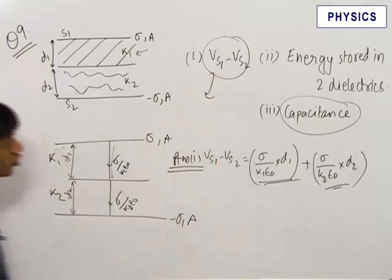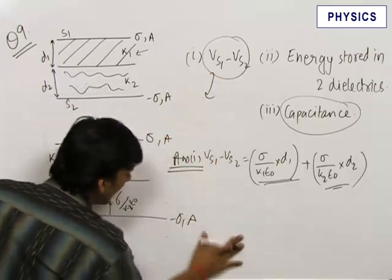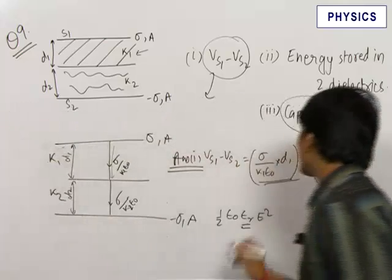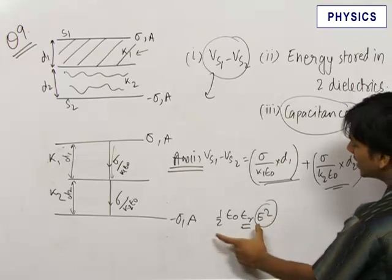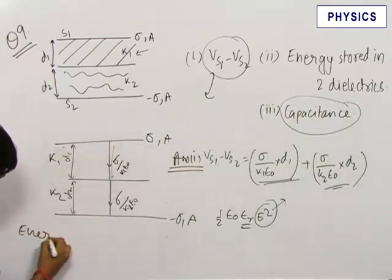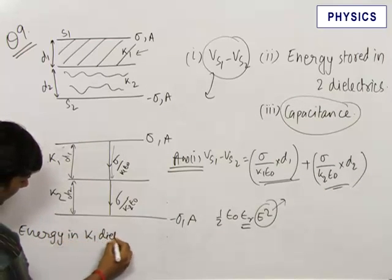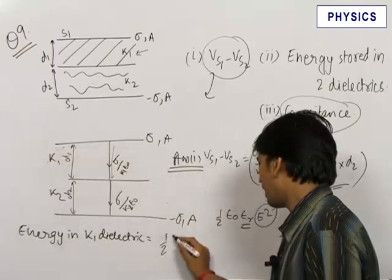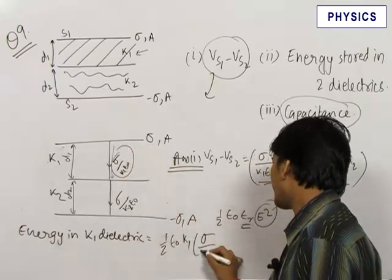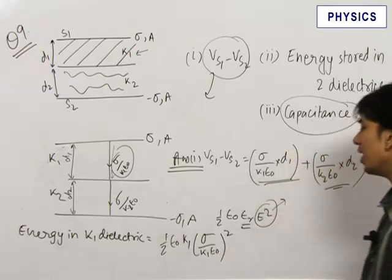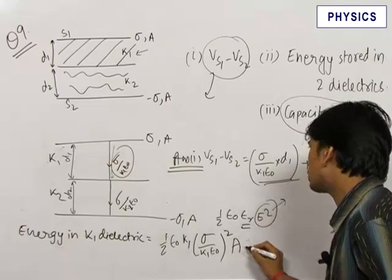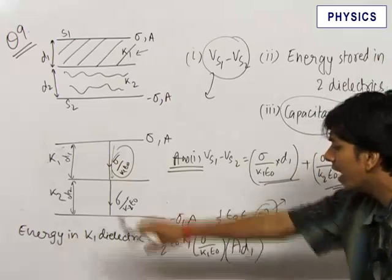Now we need to find the energy stored in the two dielectrics. There is a simple formula: the energy density in a region is equal to half·epsilon_0·epsilon_r·E². Here epsilon_r is the dielectric constant of the medium and E is the electric field in that medium. The energy stored in the k1 dielectric is: half·epsilon_0·k1·(sigma/(k1·epsilon_0))² multiplied by the volume A·d1.